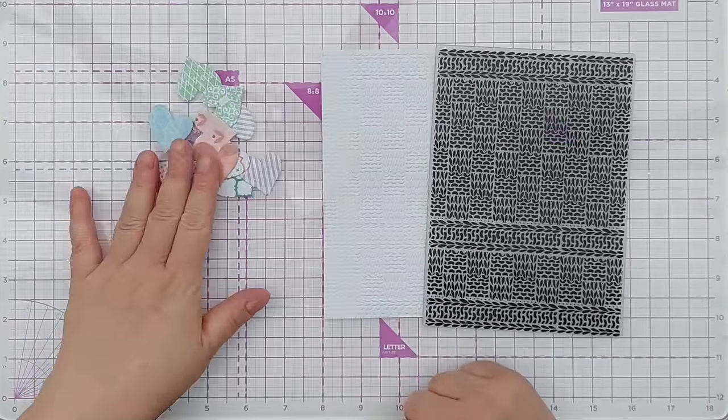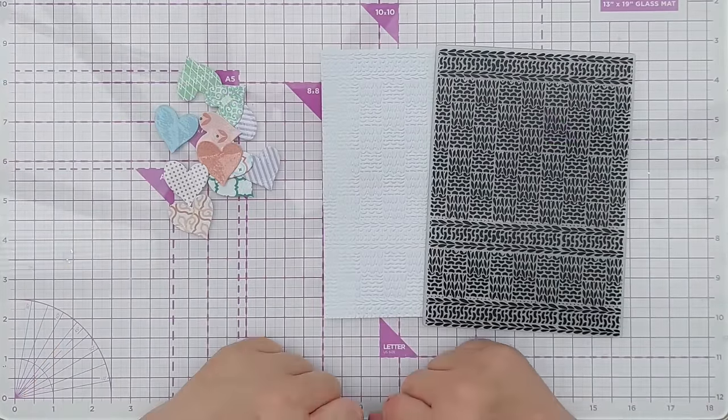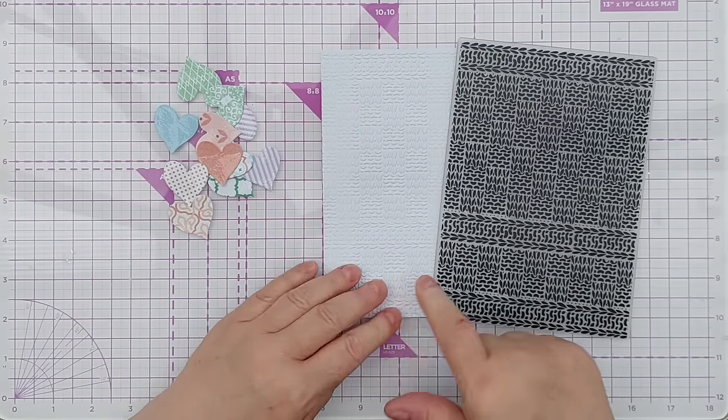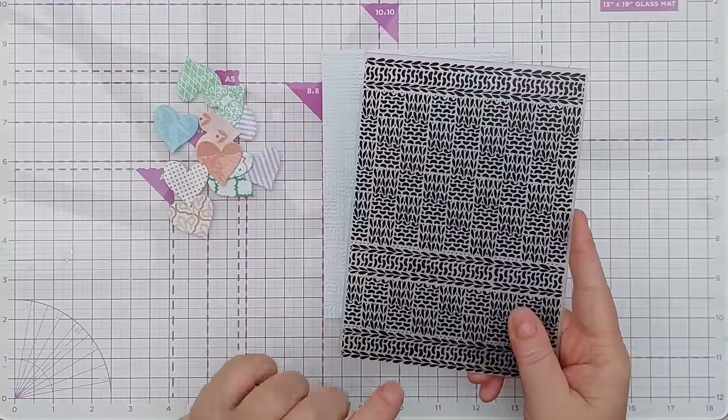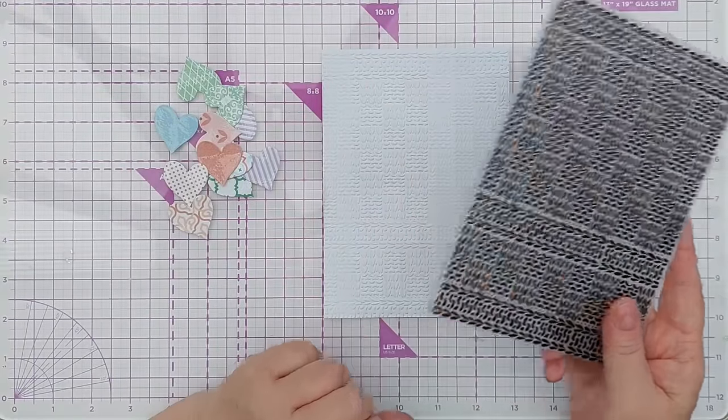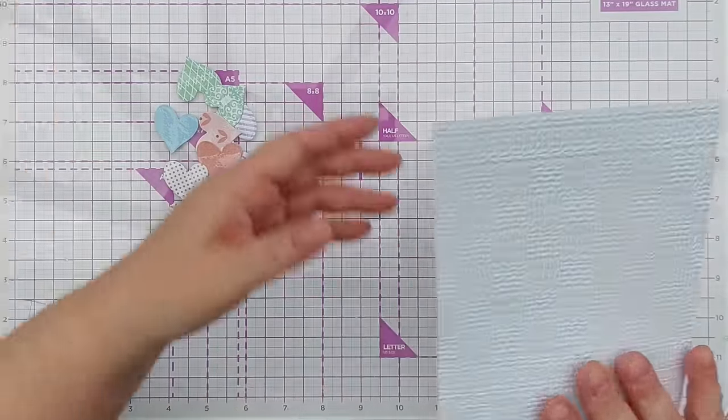So I've got my little pile of glossy hearts here ready to go and I want to create something for them to sit on. So I've taken this piece of smooth white cardstock and run it through my kettle bug with this embossing folder to create some texture. But I don't want the whole thing to be embossed, so I'm going to cut it down.